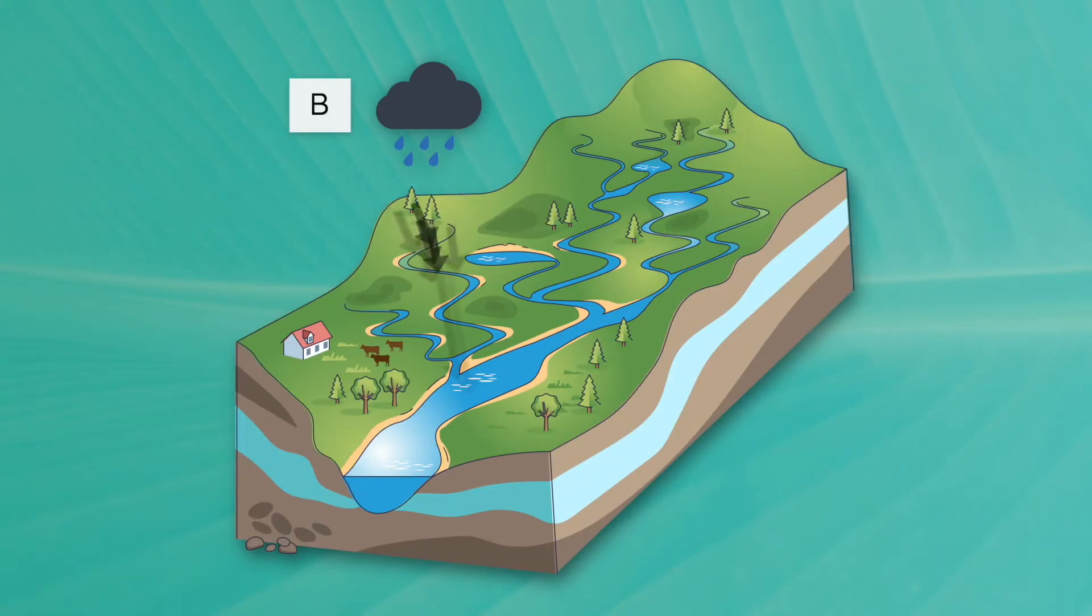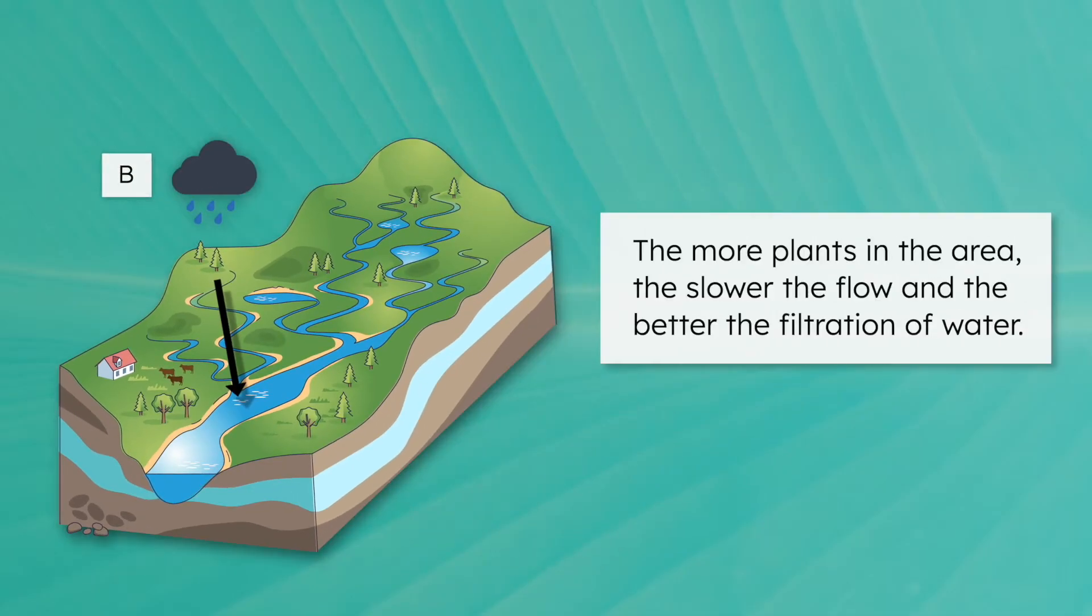Vegetation can also impact the speed of water flow in a watershed. Grasses, trees and other plants soak up some of this surface water, so the more plants in the area, the slower the flow, and the better the filtration of the water as it moves in the watershed.